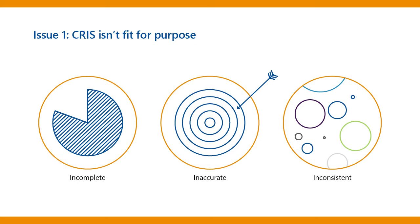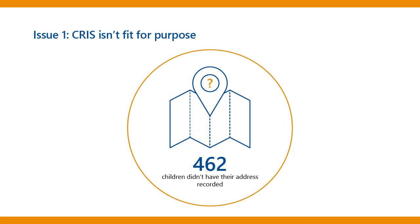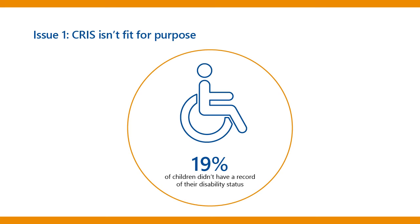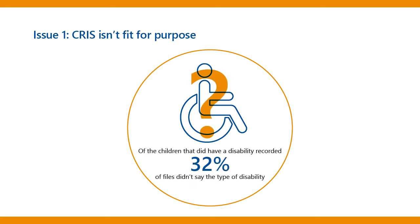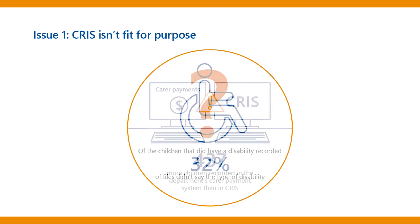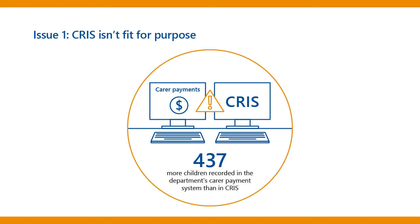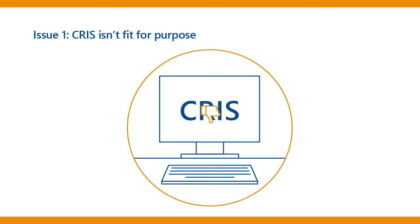For example, we found 462 children didn't have their address recorded. 19% of children didn't have their disability status recorded. Of the children that did have a disability recorded, 32% of files didn't say the type of disability, and there were 437 more children recorded in the Department's carer payment system than in CRIS. These gaps mean that the Department can't make informed decisions that are in the best interests of vulnerable children.